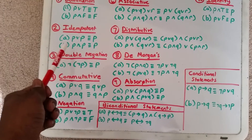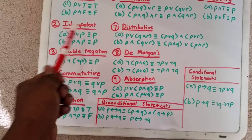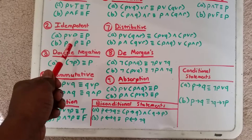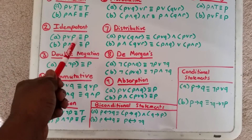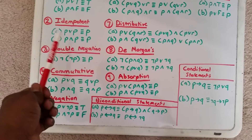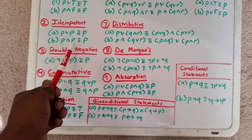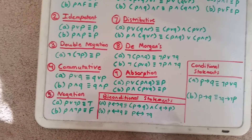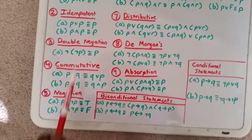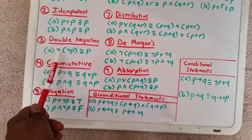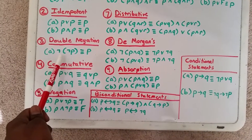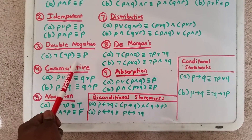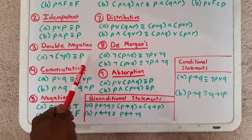Then you have the idempotent law. It says P or P just means P, and P and P just means P as well. Next, you have the double negation law, which says not not P is logically equivalent to P.